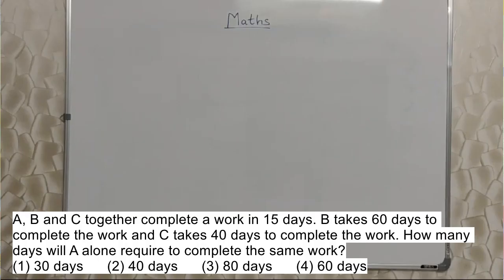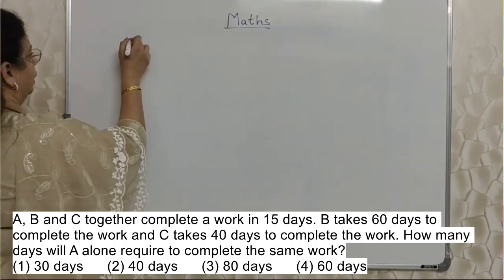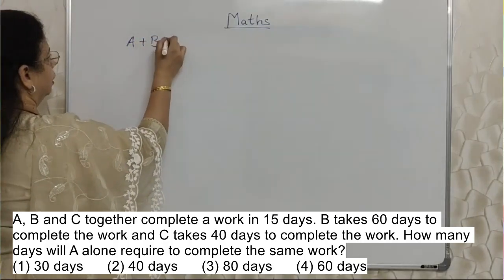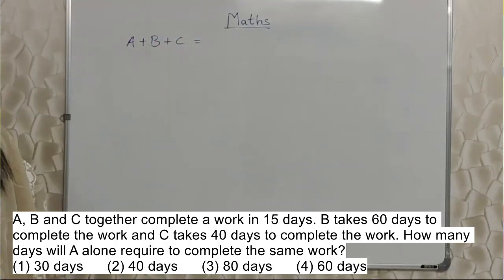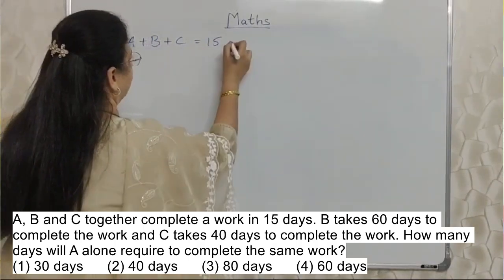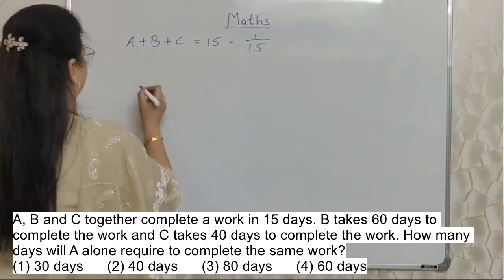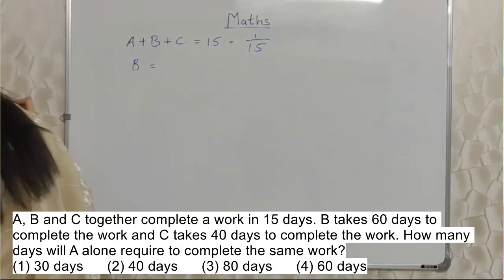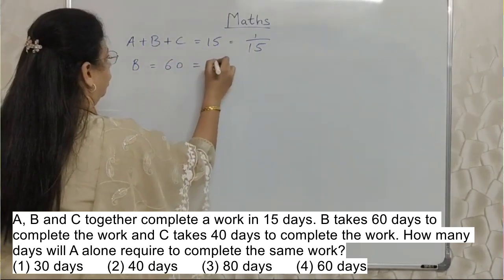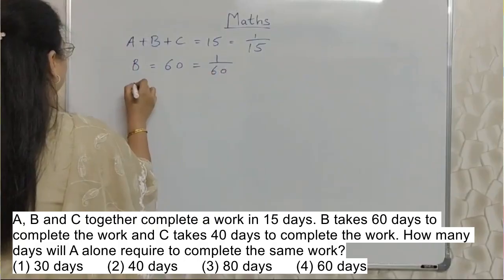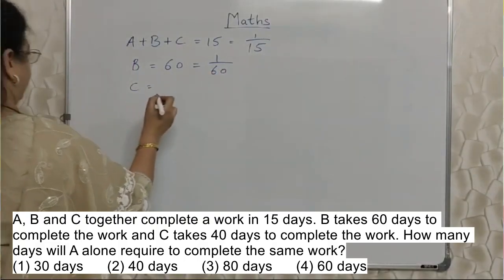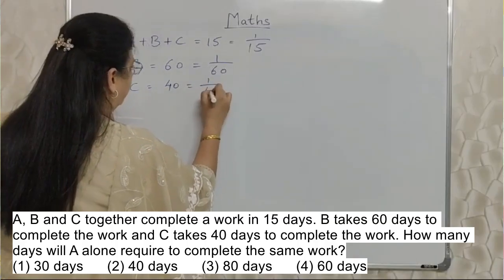A, B, and C together complete the work in 15 days. B takes 60 days to complete the work, and C takes 40 days to complete the work. How many days will A alone require to complete the same work? In one day, A, B, and C together can complete 1 upon 15. B alone can do 1 upon 60 in one day. C can complete 1 upon 40 in one day.